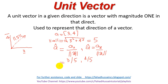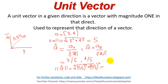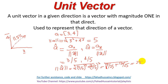Now if we take the magnitude of this unit vector, it will be equal to the square root of (3/5) squared plus (4/5) squared. Solving that gives 9/25 plus 16/25, which equals 25/25 under the square root, and finally the result is 1.